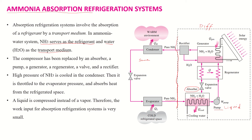The ammonia and water mixture is then pumped through the pump, and during this process it is passed through the regenerator. The function of the regenerator is to transfer heat between two streams. The ammonia-water mixture entering is at a low temperature on one side.